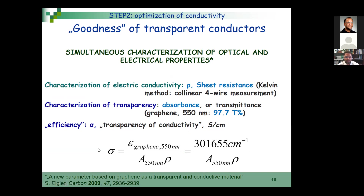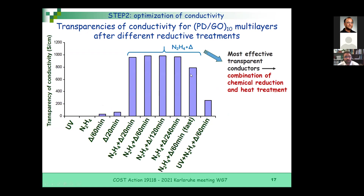We calculated a figure of merit or goodness factor: the higher the sigma — this transparency-conductivity ratio — the better the material as a transparent conductor. We found that the combined treatment of chemical reduction and heat treatment is the best for achieving high transparency-conductivity. These methodologies by themselves are not really efficient, but their combination is better. UV treatment is not needed.